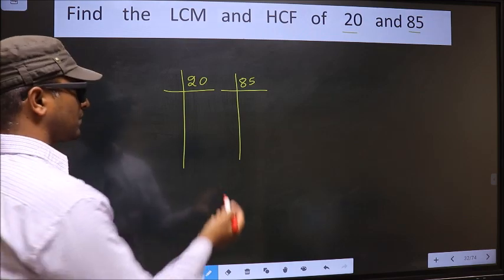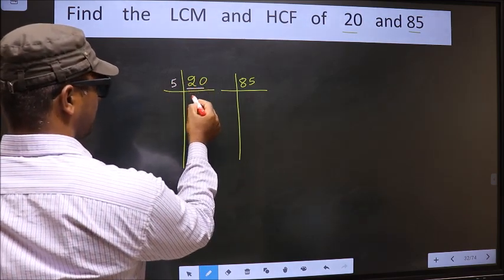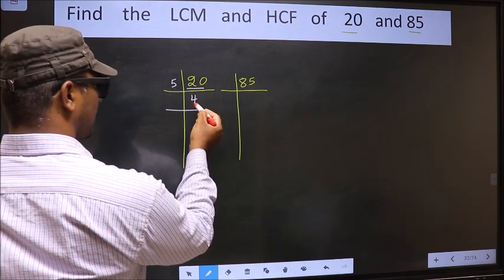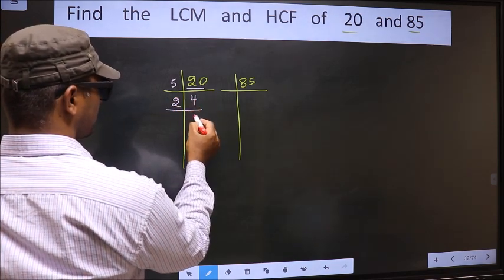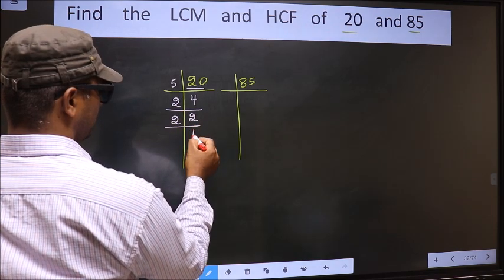Okay, next. Here first number is 20. 20 is 5 times 4, which is 20. Now we have 4. 4 is 2 times 2, which is 4. Now we have 2. 2 is a prime number, so 2 times 1 is 2.